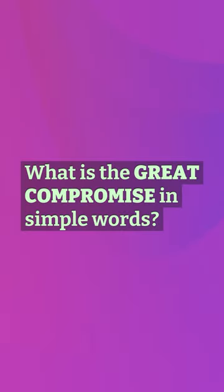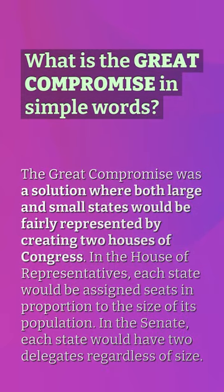What is the Great Compromise in simple words? The Great Compromise was a solution where both large and small states would be fairly represented by creating two houses of Congress. In the House of Representatives, each state would be assigned seats in proportion to the size of its population. In the Senate, each state would have two delegates regardless of size.